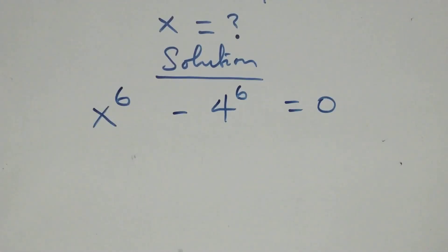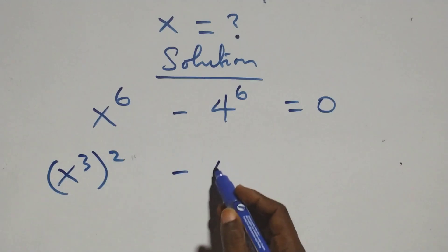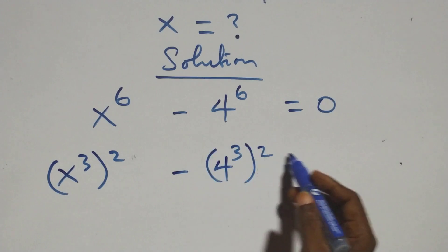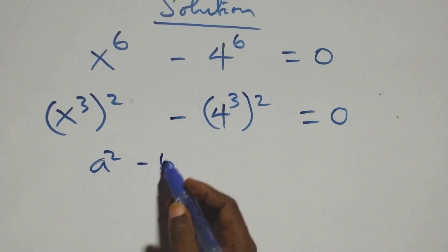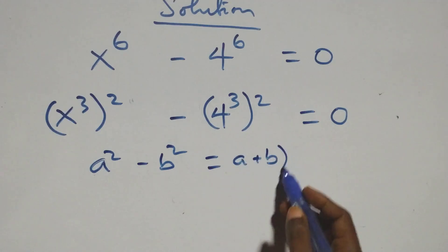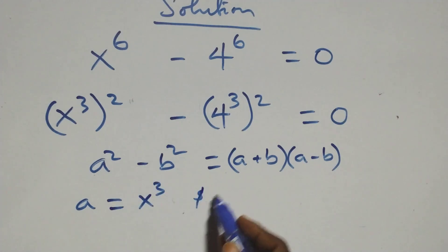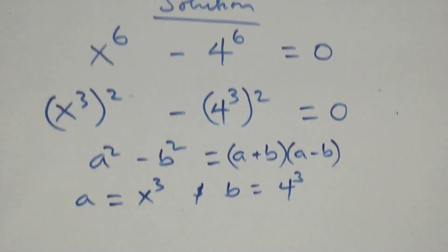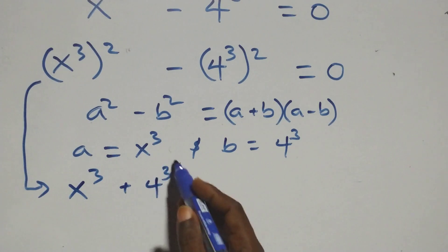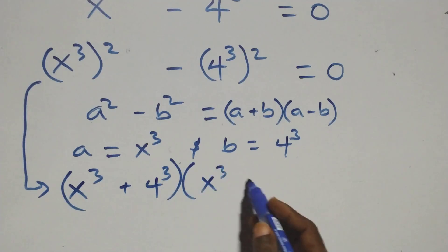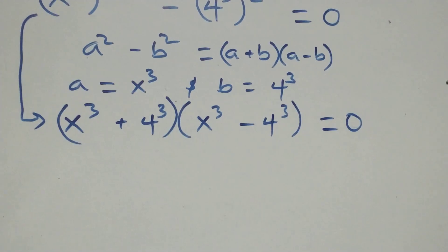Next step, we can write this as x raised to power 3 squared minus 4 raised to power 3 squared equals to 0. Then this follows the identity a squared minus b squared, which is the same thing as a plus b into bracket open bracket a minus b, where a stands as x raised to power 3 and b stands as 4 raised to power 3. So all we have becomes x raised to power 3 plus 4 raised to power 3 into brackets open bracket x raised to power 3 minus 4 raised to power 3 close bracket equals to 0.